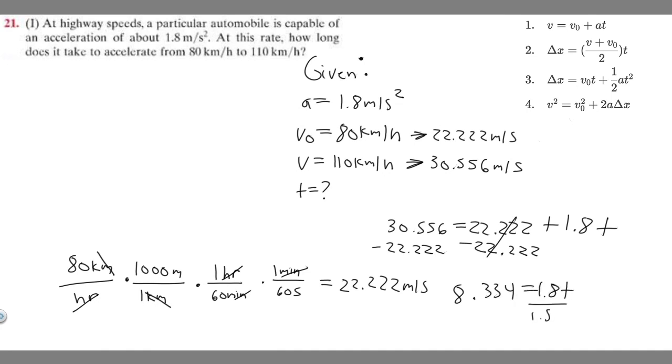Divide both sides by 1.8. That'll get rid of that on that side. 8.334 divided by 1.8 equals 4.63. So t is going to be equal to 4.63. I'm just going to round to the tenth place, so 4.6. We're using meters per second, so this is going to be in seconds. The amount of time it takes is going to be 4.6 seconds.